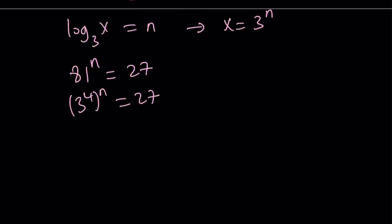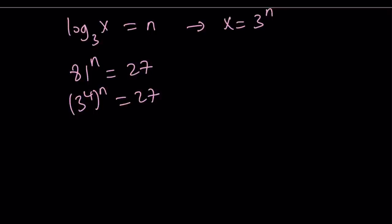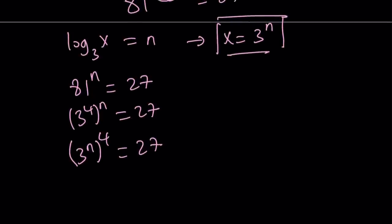So I can just switch them around like this. And now I can replace 3 to the power n with x easily. And let's go ahead and do that. And that gives us x to the fourth power equals 27. Again, we're going to be getting two solutions, but we're going to reject the negative solution. Because remember, x needs to be x needs to be greater than zero.